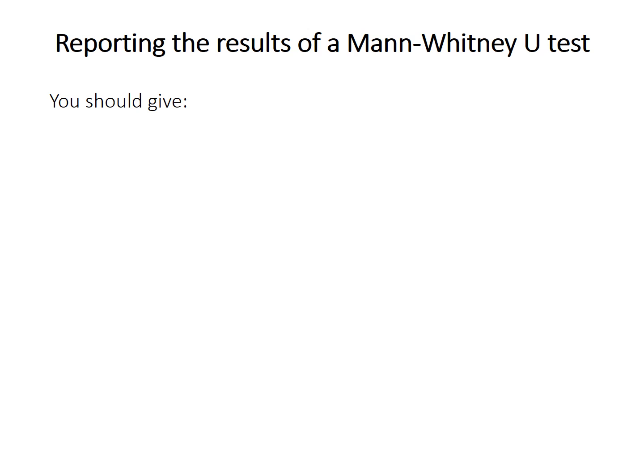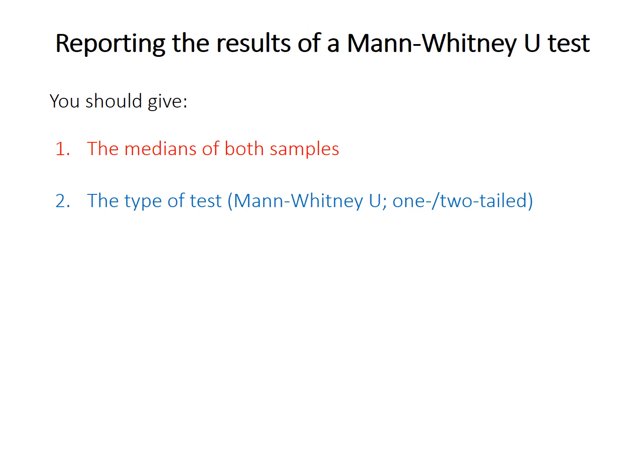When reporting results, give the medians of both samples. Even though the Mann-Whitney test doesn't test for differences in the median, the median is the best measure of central tendency for non-normal data. Always report the type of test performed — you can call it the Mann-Whitney U-test or the Wilcoxon rank sum test, it doesn't matter. Note whether you did a one-tailed or two-tailed test; two-tailed is almost always appropriate, though a one-tailed alternative is possible if specified based on prior expectation rather than the data itself.